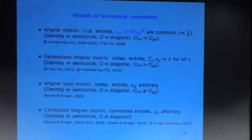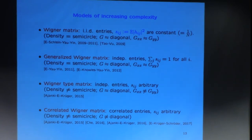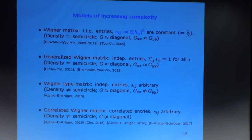The next category is generalized Wigner matrices, introduced a few years ago. Here we keep independent entries but drop the condition that variances are the same, introducing instead the condition that the sum of variances in each row is constant — the same for every row, which you can normalize to be one. The picture is basically the same: density is still a semicircle, the resolvent is diagonal, and all diagonal elements are the same.